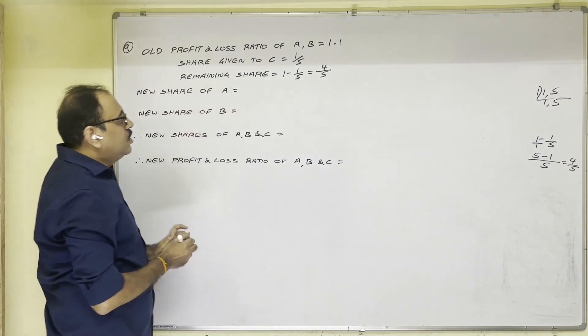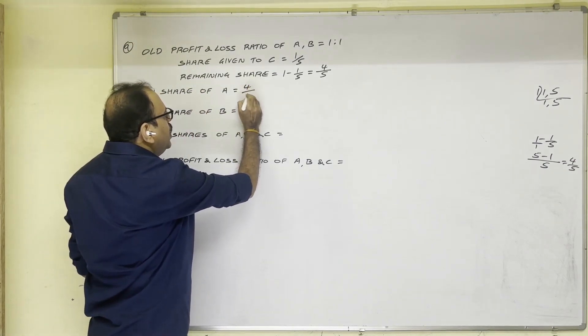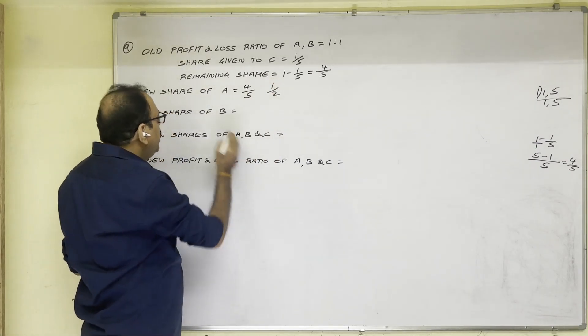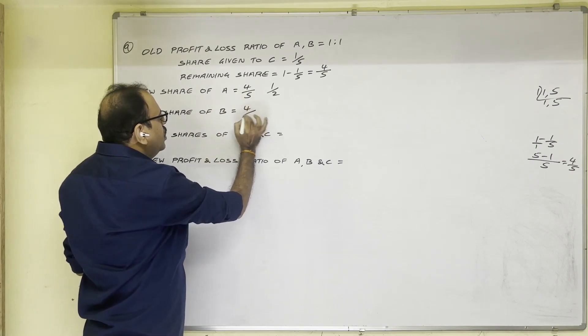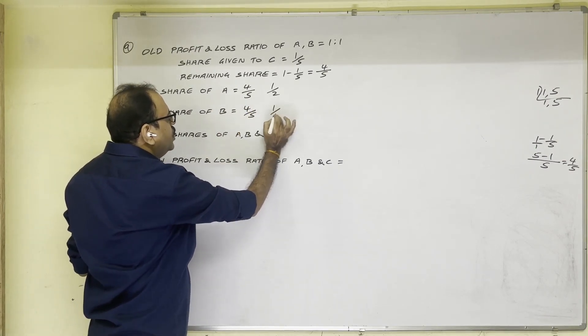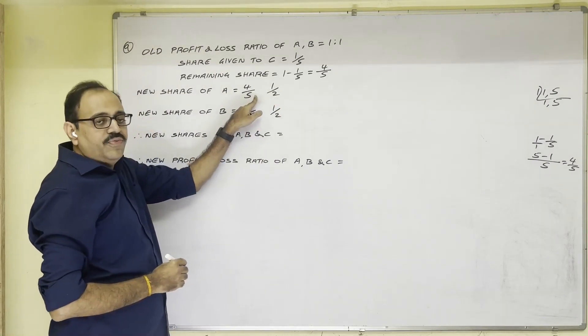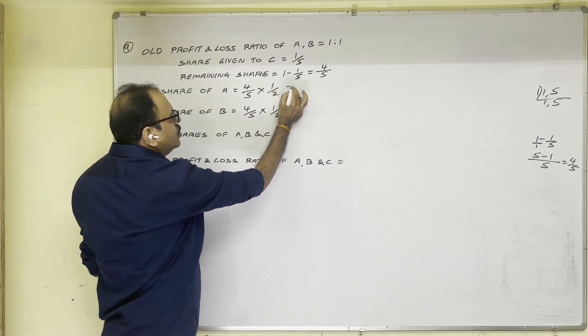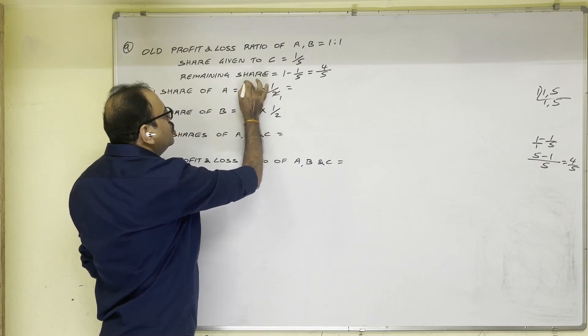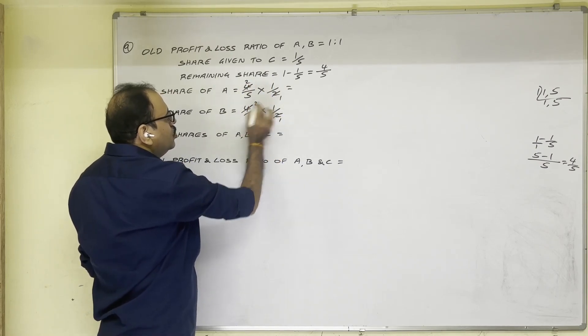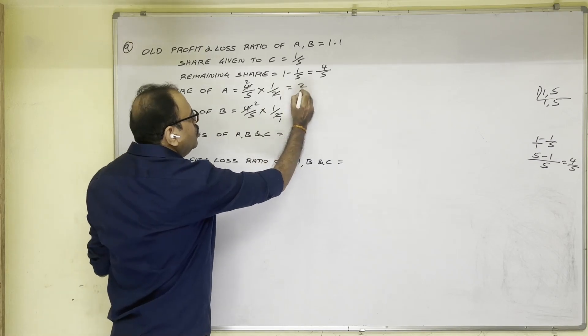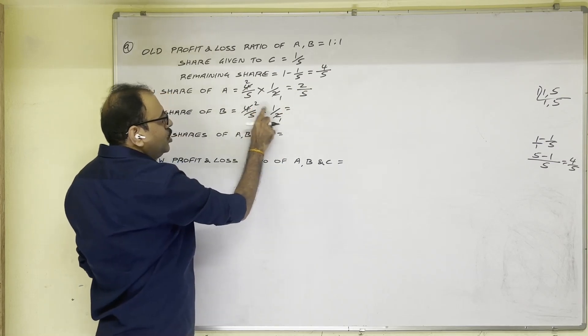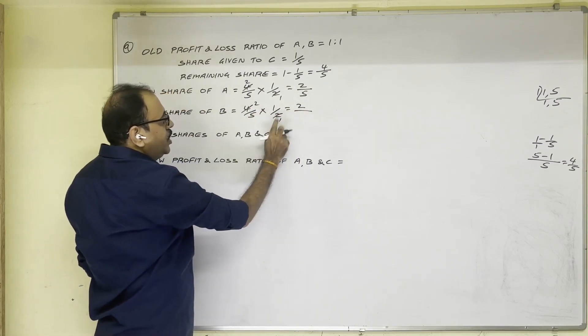So new share of A is equal, in remaining share, half A takes. Similarly new share of B is equal, in remaining share, half B takes. Half of 4/5. How it will come? We have to multiply. Here also see. So 2 ones are, 2 twos are. Here also 2 ones are, 2 twos are. So 2 into 1, 2 divided by 5 into 1 equals 2/5. Here 2 into 1, 2 divided by 5 into 1 equals 2/5.